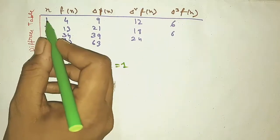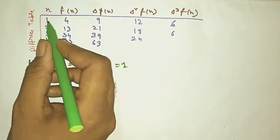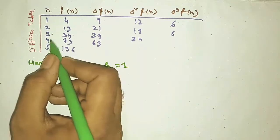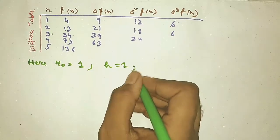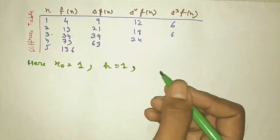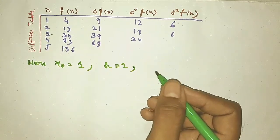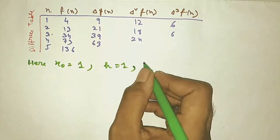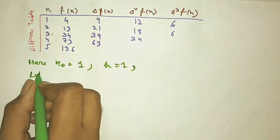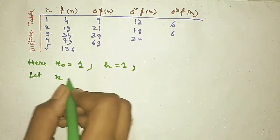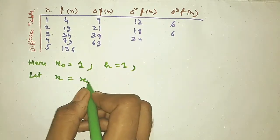Here X₀ equals 1, and H means the difference between consecutive X values. The X values are 1, 2, 3, 4, 5, so each difference is 1. This is an equispaced distribution with H equals 1.